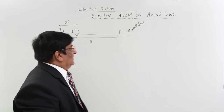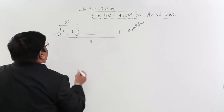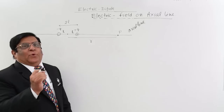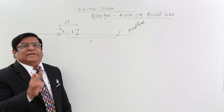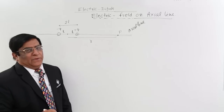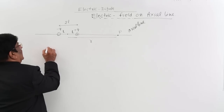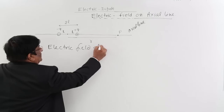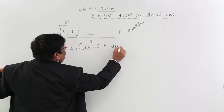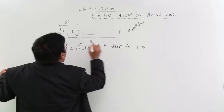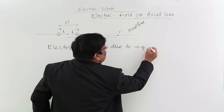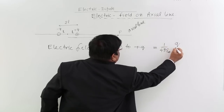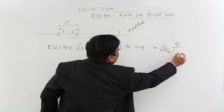So we start calculating the electric field at point P. The formula we are going to use is the electric field due to a point charge — that is the only formula we know, which has been derived with the help of Coulomb's formula. Electric field at P due to plus Q is 1 upon 4π ε₀, multiplied by the charge Q upon the square of the distance.